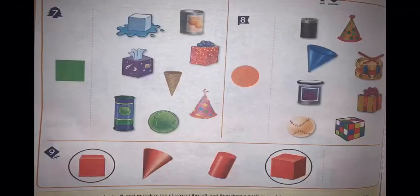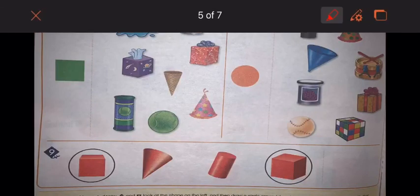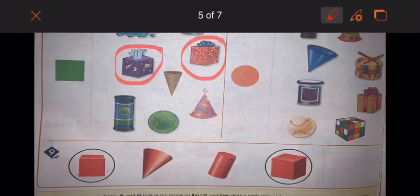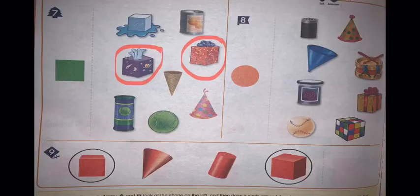Number seven, they are asking for square. So I will circle the tissue box, I will circle the gift and the ice cube. The party hat, the ice cream cone, the ball, the cans I will not circle them because they do not have square as a flat surface.